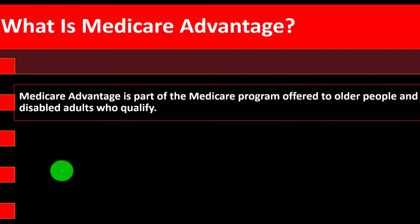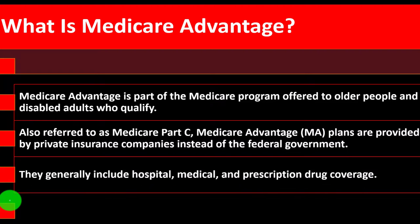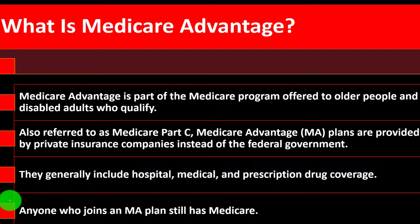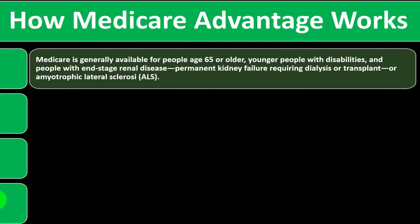Medicare Advantage is part of the Medicare program offered to older people and disabled adults who qualify. Also referred to as Medicare Part C, Medicare Advantage plans are provided by private insurance companies instead of the federal government. They generally include hospital, medical, and prescription drug coverage. Anyone who joins a Medicare Advantage plan still has Medicare.